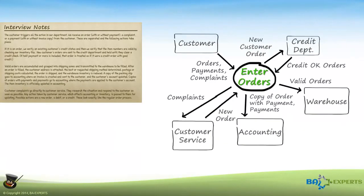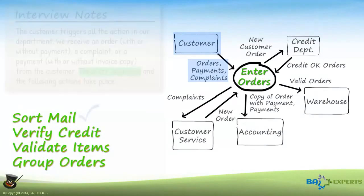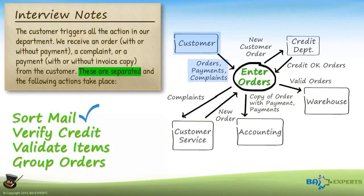Looking at the context diagram, the orders, complaints, and payments data flow from the customer is where it all starts. Based on the interview notes and our list of potential internal processes, sort mail appears to be the first step in the process.